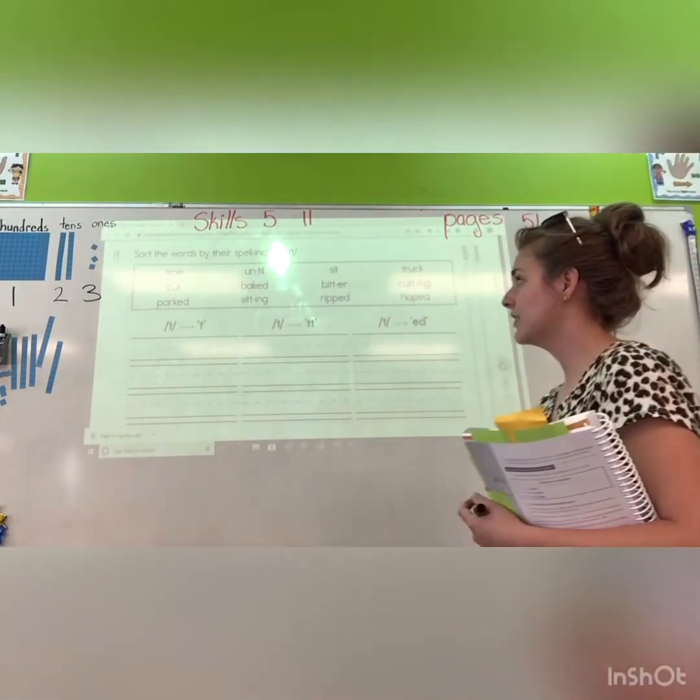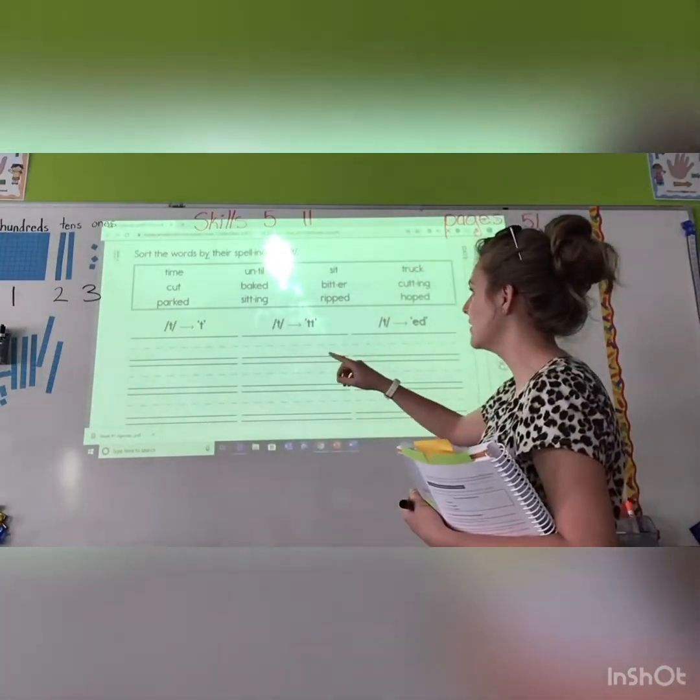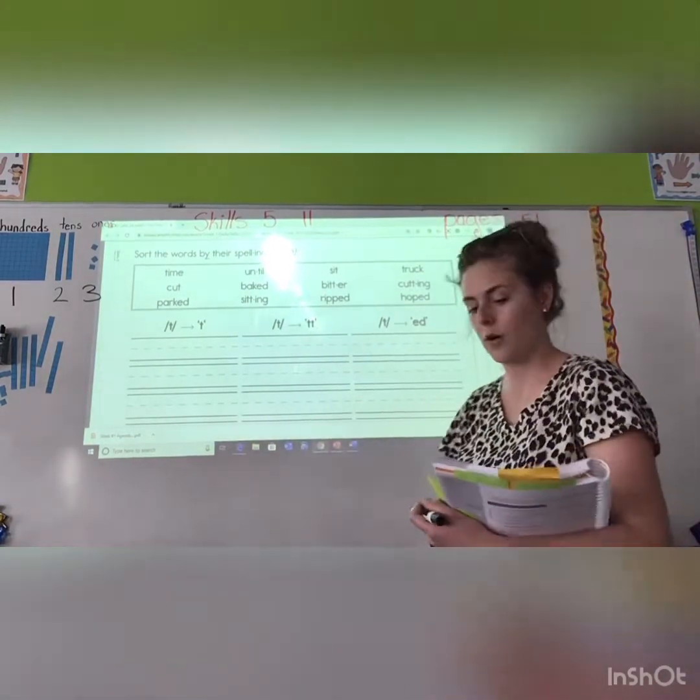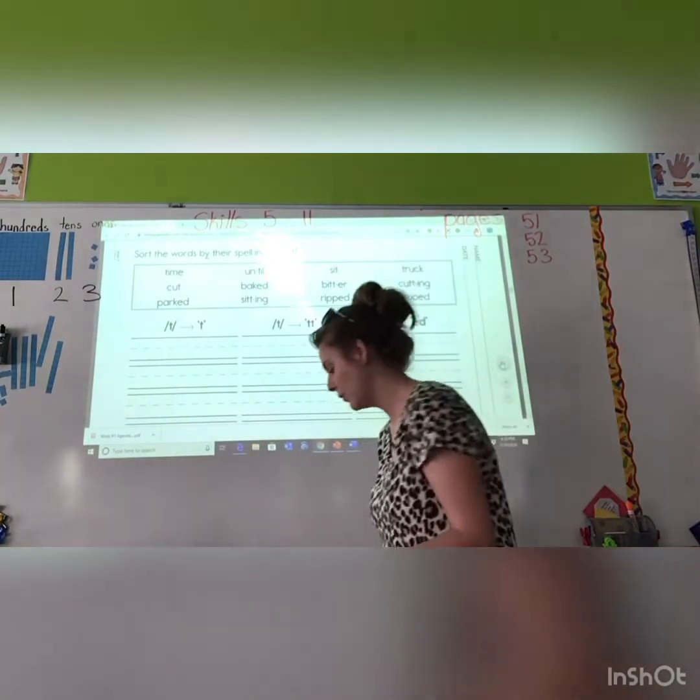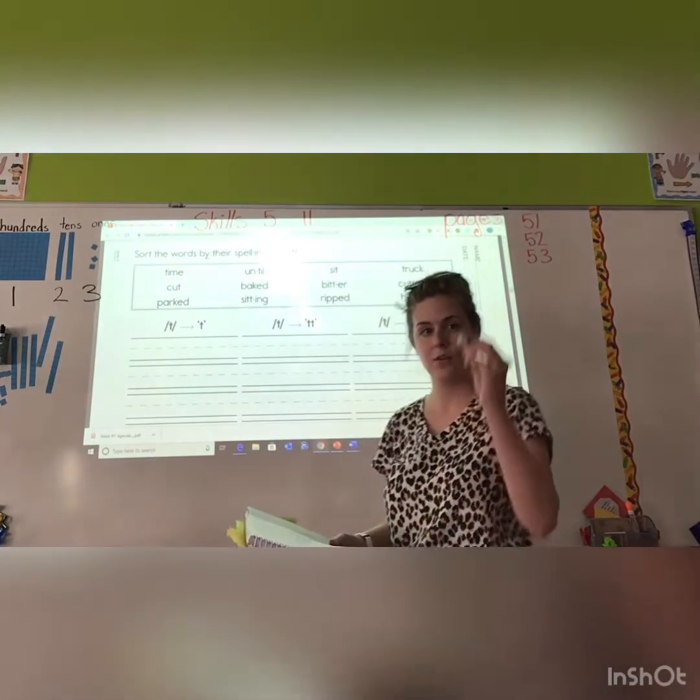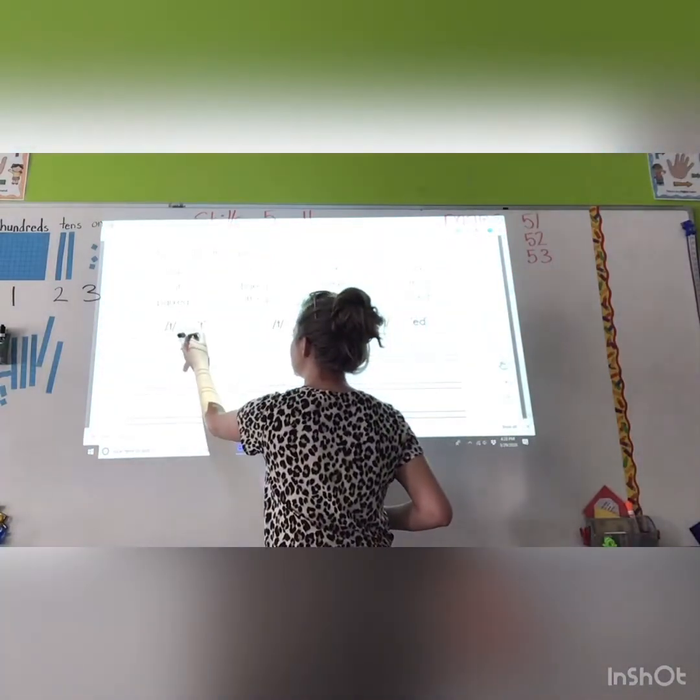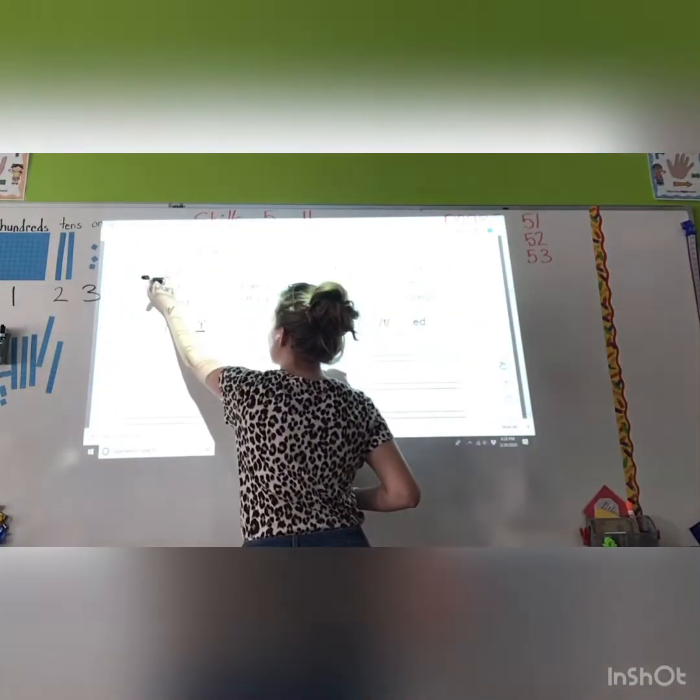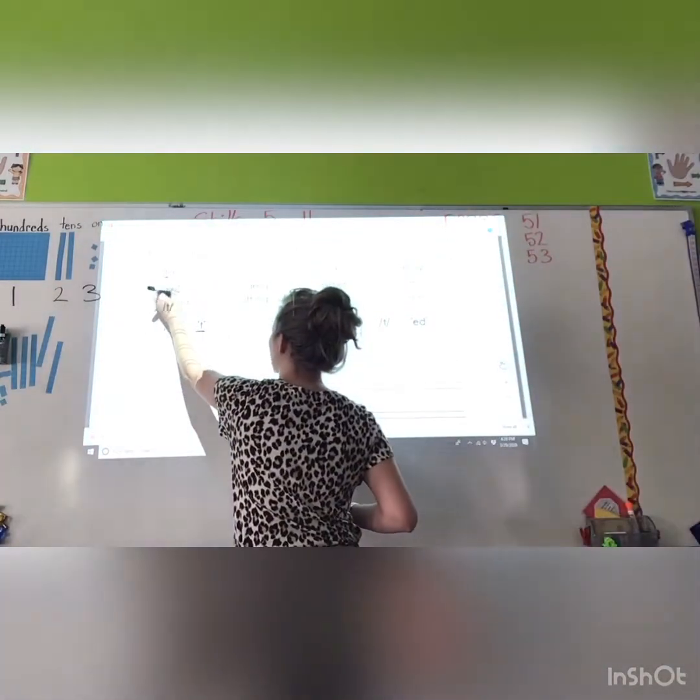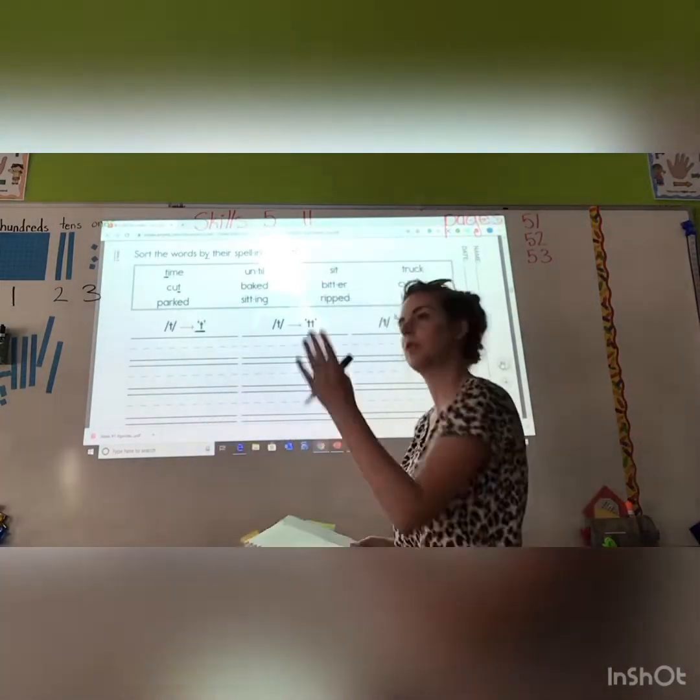So, while that is loading, I hope you can see that. There it is. Perfect. It's working. Good job. So, what we're going to do is we're going to be sorting these words by the T in their sound that they make. To do this, I'm going to color code because we all love a good color code. We're going to underline with black all the one T's.